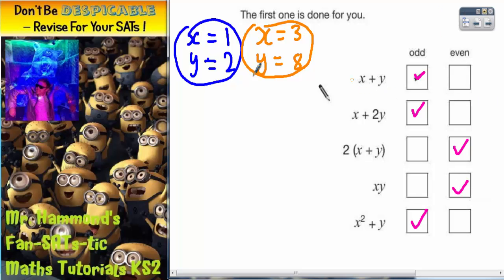Well, x plus y would be 3 plus 8, which is 11. And 11 is still odd. So that one works again.